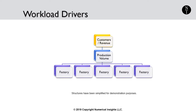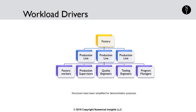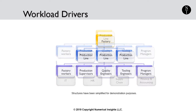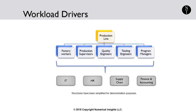If we take a look at what drives this company overall — they are a manufacturing company — customers drive production volumes. The production volume drives the number of factories they need. Within each factory, the volume drives the number of production lines or manufacturing cells. The number of manufacturing cells drives the number of factory workers, supervisors, engineers of various types, and program managers. Outside of manufacturing, we have support functions like IT, HR, supply chain, and finance, which essentially support the actual factory operations. As we work through these connections, we are working from the customer level down through the structure into the workforce level.